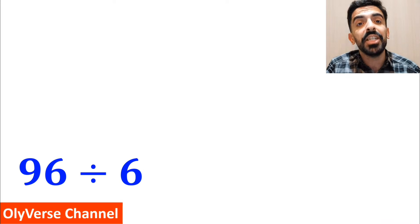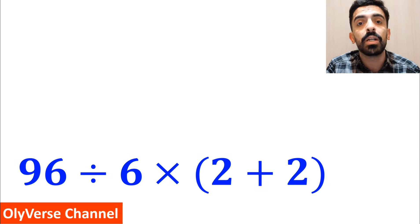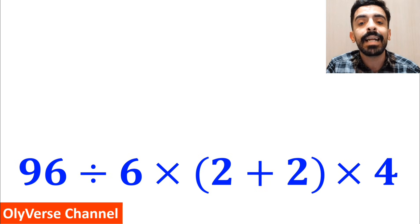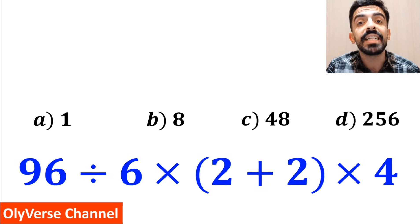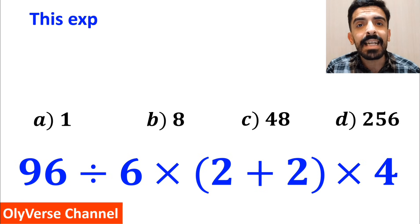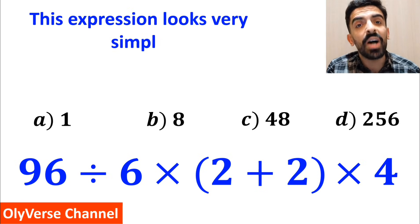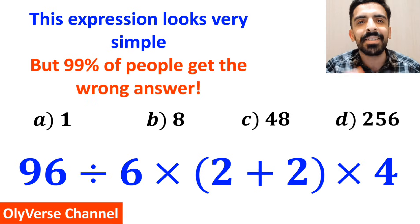What is the value of the expression 96 divided by 6 multiplied by open parenthesis 2 plus 2 closed parenthesis, and again multiplied by 4? Which option do you think is the correct answer to this question? This expression looks very simple but 99% of people get the wrong answer.